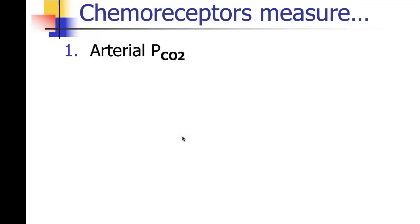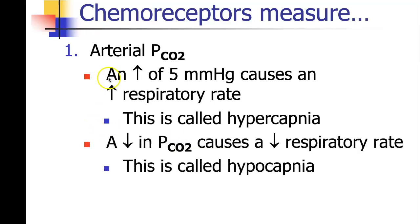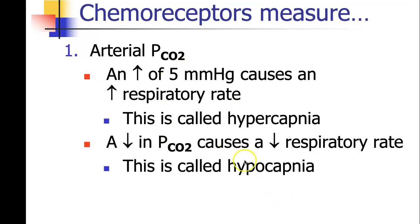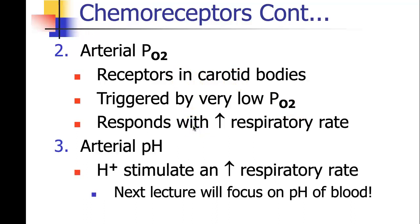Chemoreceptors primarily measure arterial pCO2. An increase of five millimeters of mercury causes an increase in respiratory rate — this is called hypercapnia. A decrease in pCO2 causes a decrease in respiratory rate — hypocapnia. Remember: hyper always means increase, hypo means lower or decreased. There are also receptors in the carotid bodies, but these are only triggered by very low pO2. Most regulation comes from arterial pCO2 sensation. There are also receptors for arterial pH — when you have increased hydrogen ion, this stimulates an increase in respiratory rate. Next time we'll talk all about the buffering system and how we regulate blood pH.